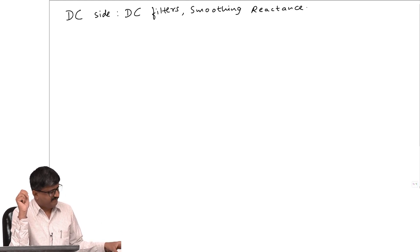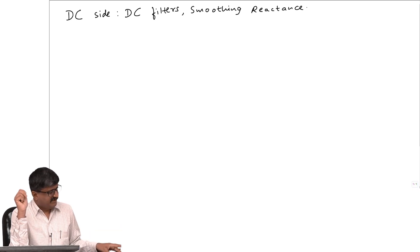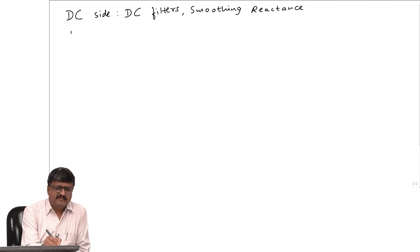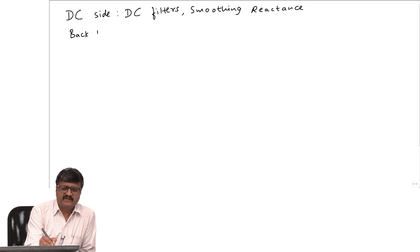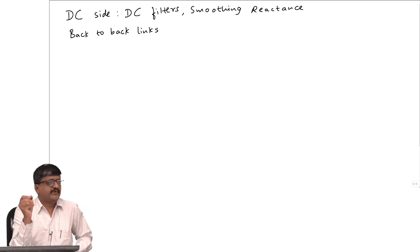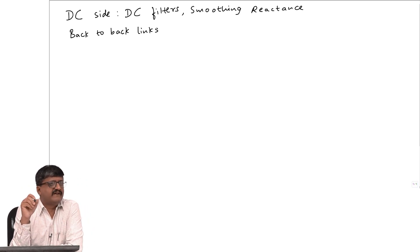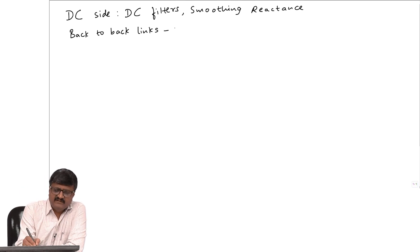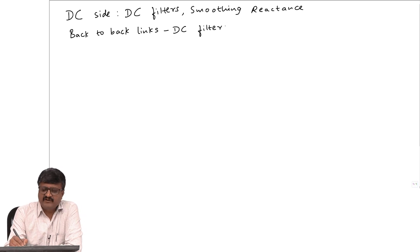I will not get into the details of the smoothing reactor or the other DC filters, but one point to notice: if we have only back-to-back connections — back-to-back links — that means we need to interconnect two systems without having a transmission line. That means the rectifier and the inverter are in the same building. So there is no transmission line; such DC systems are called back-to-back links, and they do not require DC filters.